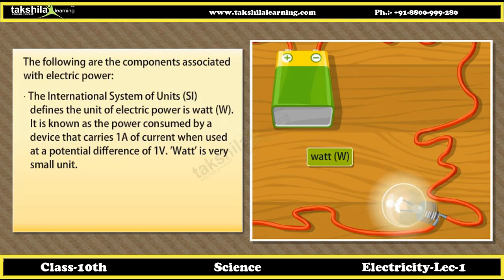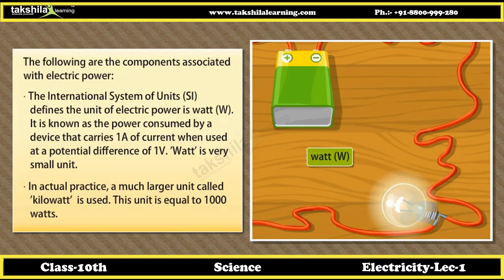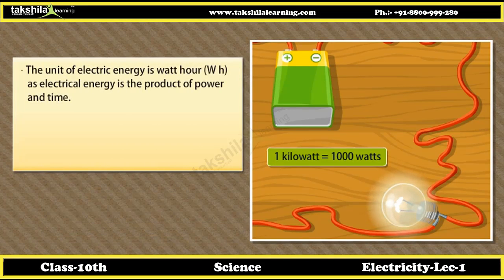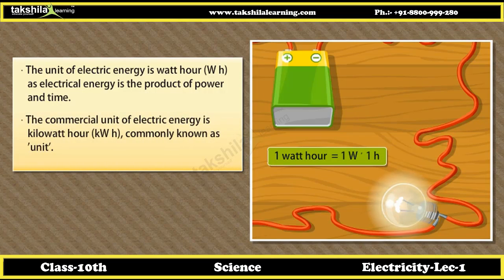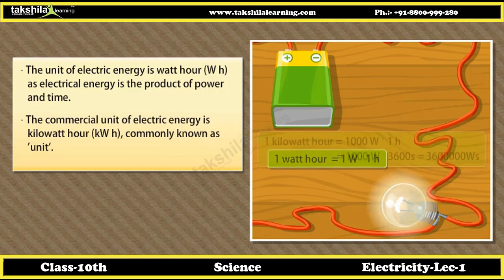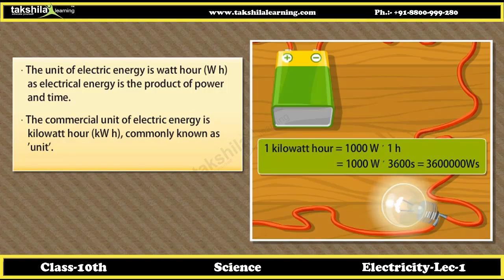Watt is a very small unit. In actual practice, a much larger unit called the Kilowatt is used, which equals 1000 Watts. The unit of electric energy is Watt-hour, Wh, as electrical energy is the product of power and time. The commercial unit of electric energy is the Kilowatt-hour, kWh, commonly known as a unit.